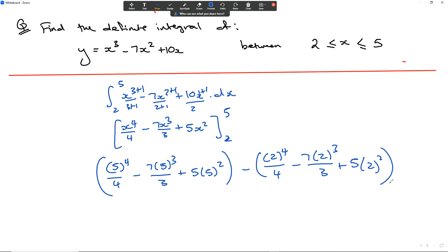Once we have that, we put that into a calculator and work it out. 5 to the power of 4 over 4, minus 7 times 5 to the power of 3 divided by 3, plus 5 times 5 squared, minus 2 to the power of 4 over 4, minus 7 times 2 to the power of 3 over 3, plus 5 times 2 squared, comes to negative 63 over 4, which is equal to negative 15.75.